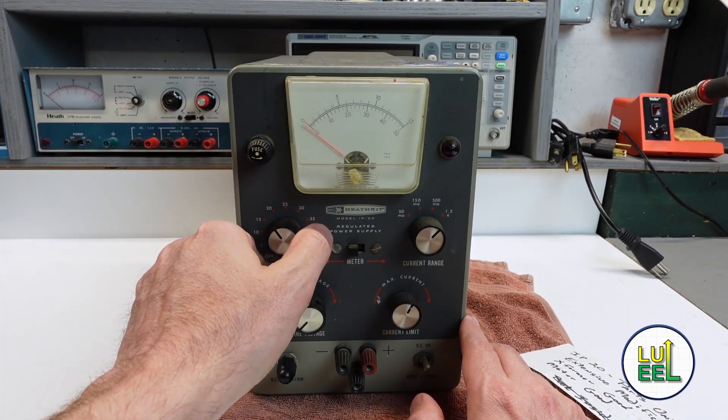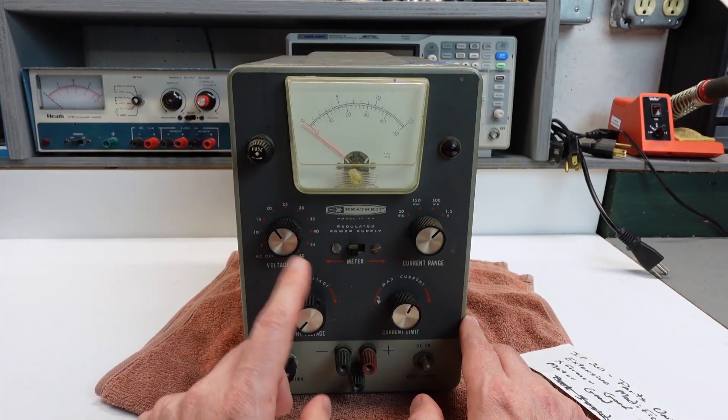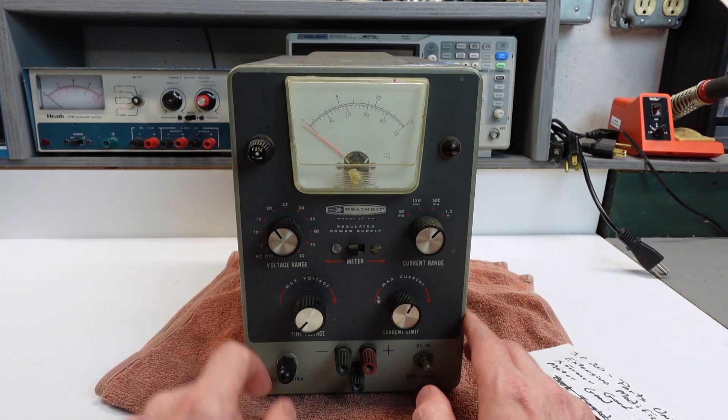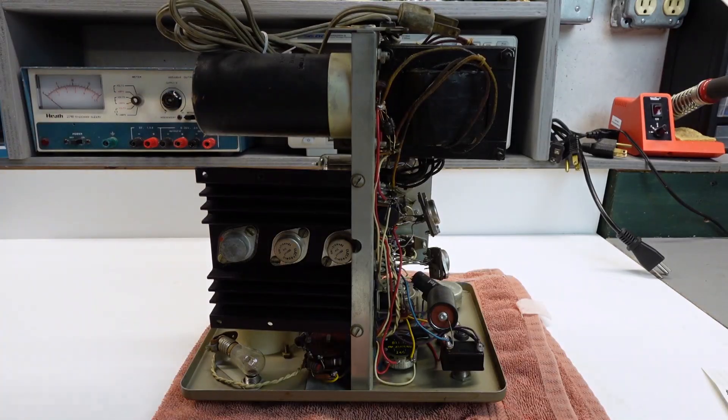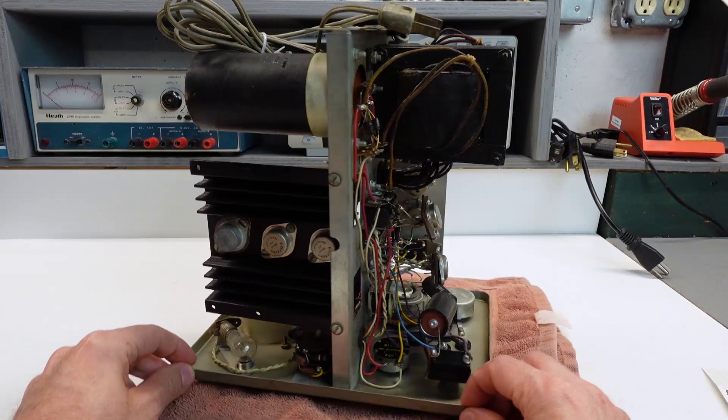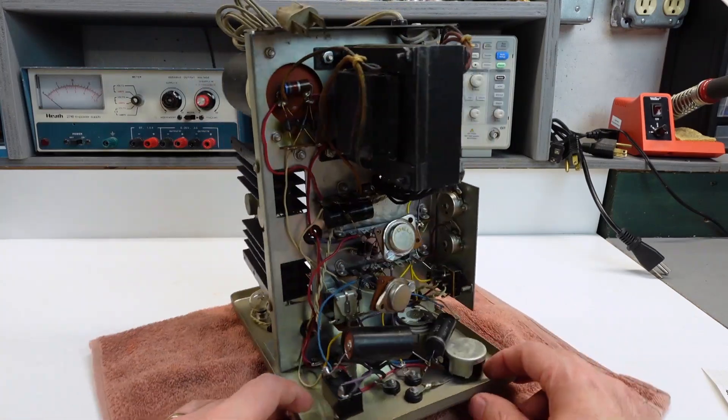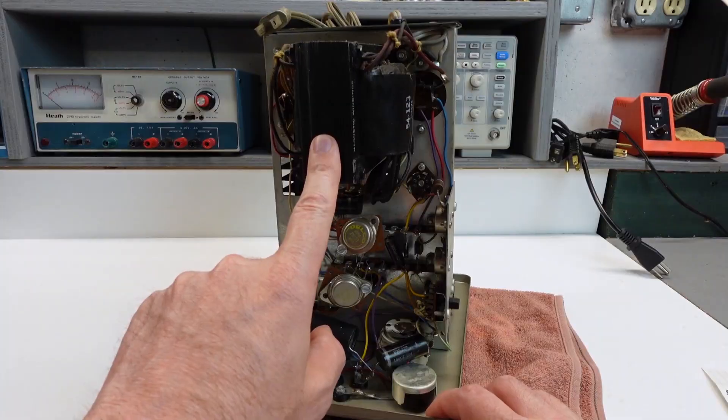I picked up this non-working Heathkit IP20 power supply at this year's Hamvention for $10. It's a non-functional parts unit that definitely needs some TLC. You can check out my episode about all my Hamvention purchases for more details about its condition. And before I can move forward with any repairs or mods, I've got to make sure that the meter and the transformer are both still good.